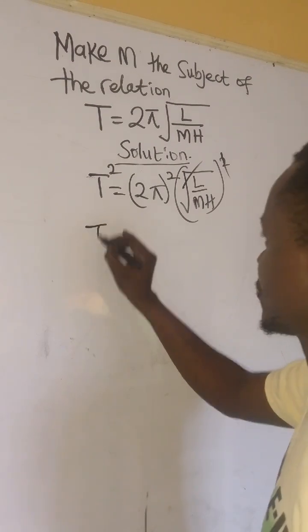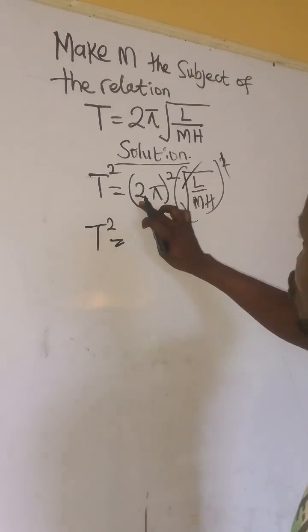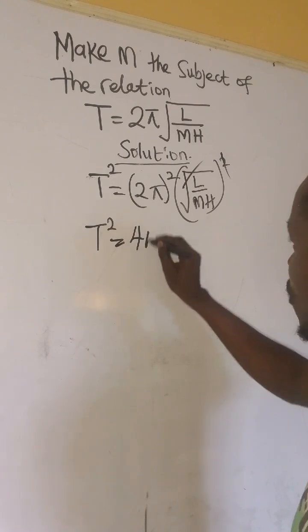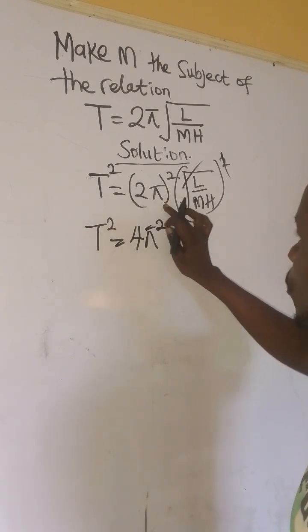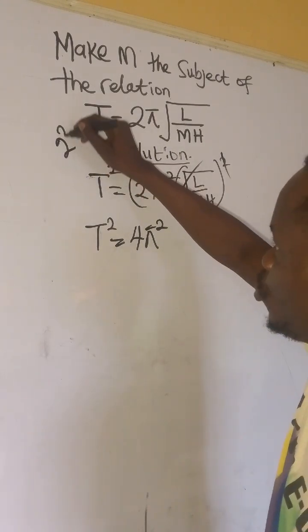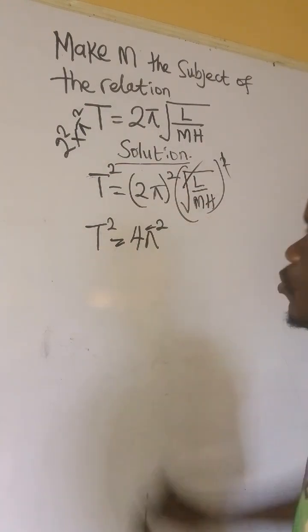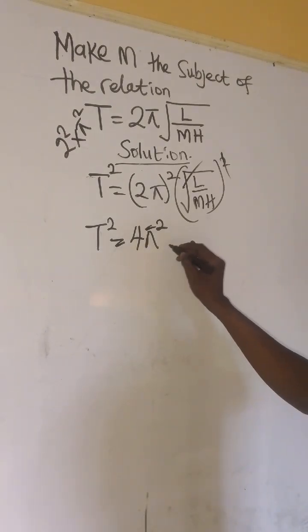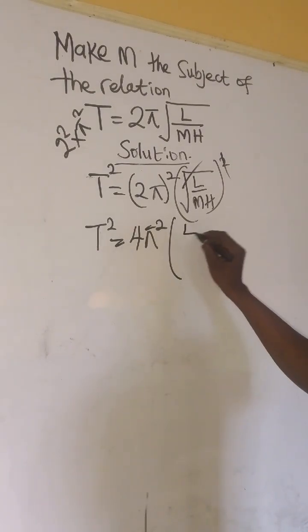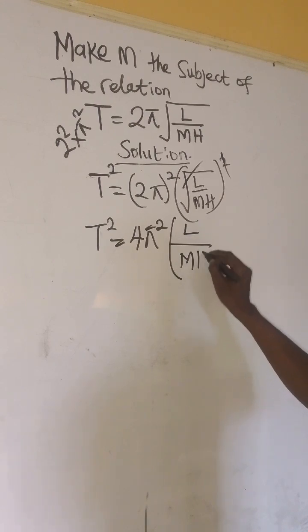So we have T² = 2². This is 2 squared, which gives us 4π². If we open our bracket, it becomes 2² times π². Then we multiply by l/mh.